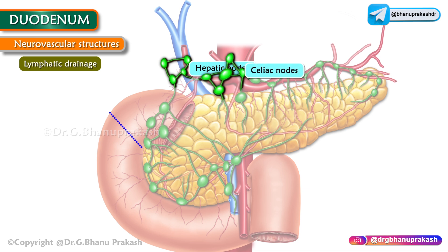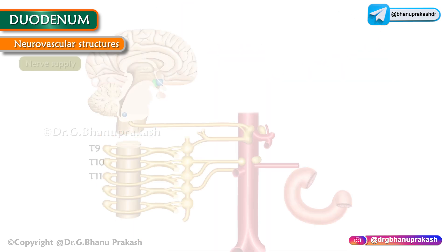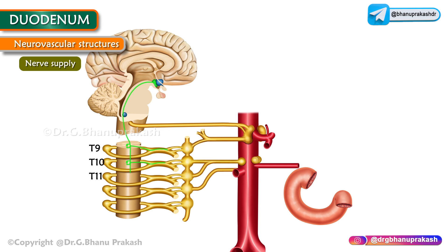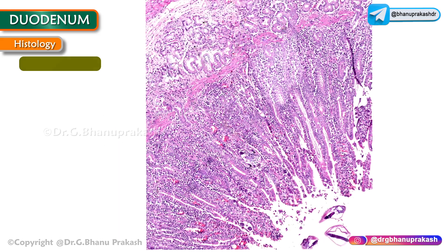The nerve supply: sympathetic innervation is from the T9 to T10 spinal segments, and parasympathetic nerve supply is from the vagus nerve via the celiac plexus. The mucous membrane lining the duodenum contains evaginations in the form of villi with columnar cells that have microvilli, and invaginations to form crypts of Lieberkühn.